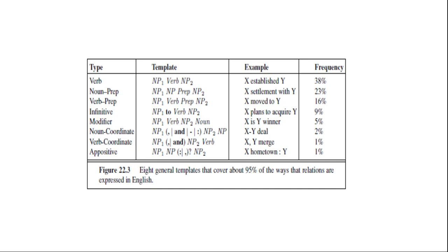TextRunner has extracted hundreds of millions of facts from a corpus of half a billion web pages. For example, even without predefined medical knowledge, it has extracted over 2,000 answers to medical queries. Correct answers include antibiotics, ozone, chlorine, cipro, broccoli, and sprouts. Questionable answers include 'water', which comes from the sentence 'boiling water for at least 10 minutes will kill bacteria' — it would be better to attribute this to 'boiling water' rather than just 'water'. That concludes the topic of information extraction.